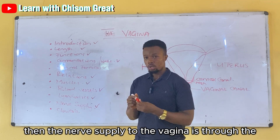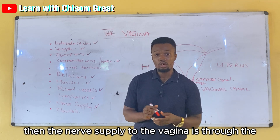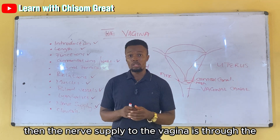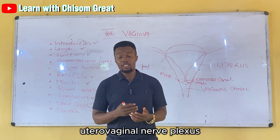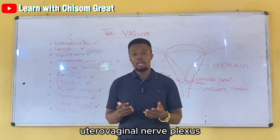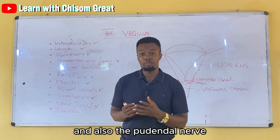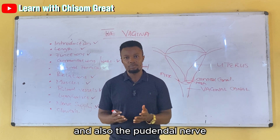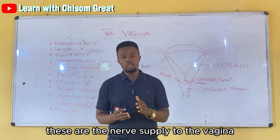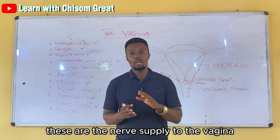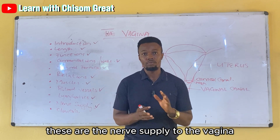The nerve supply to the vagina is through the uterovaginal nerve plexus and also the pudendal nerve.